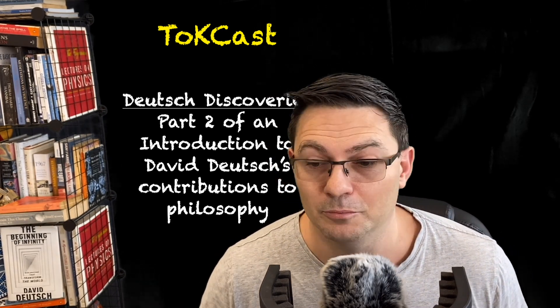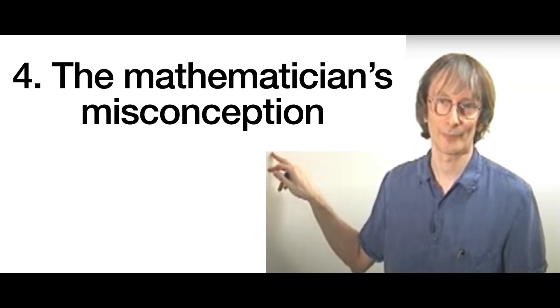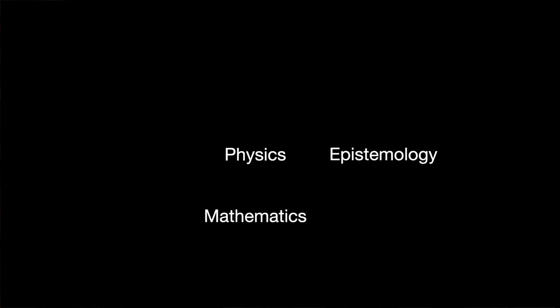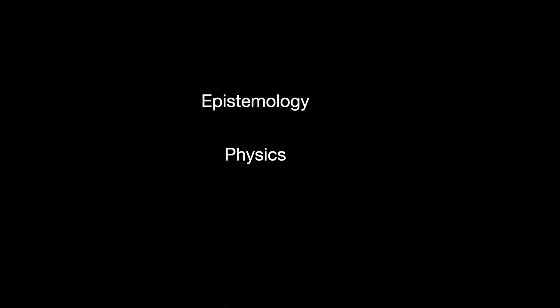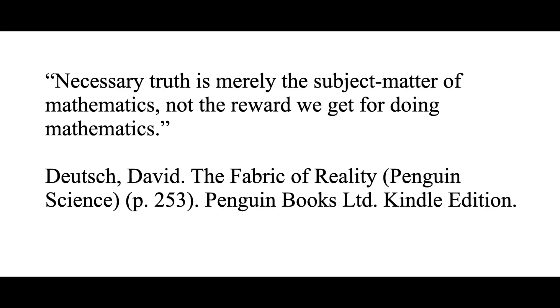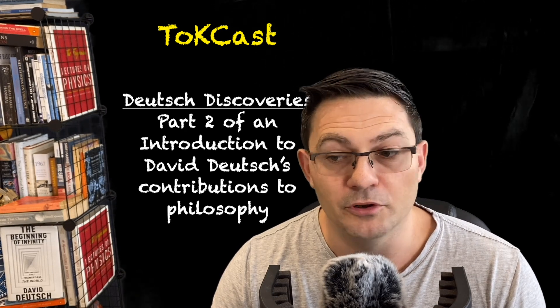Four: the mathematician's misconception. A profound and subtle idea about the relationship between mathematics, physics, and epistemology is the mathematician's misconception. Mathematics is about necessary truth. As David writes in The Fabric of Reality, necessary truth is the subject matter of mathematics, not the reward we get for doing mathematics. What we know is always prone to error. Quantum theory puts a strict barrier before us on perfection.